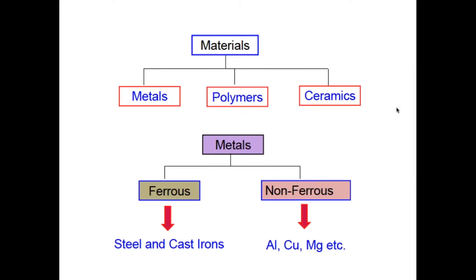Let's start by talking broadly about materials and the different types used in industry. We can broadly classify materials as metals, polymers, or ceramics. Today we're focusing on metals. Metals can be divided roughly between ferrous and non-ferrous. Ferrous refers to steel and cast iron, while non-ferrous metals include aluminum, copper, magnesium, and other alloys.